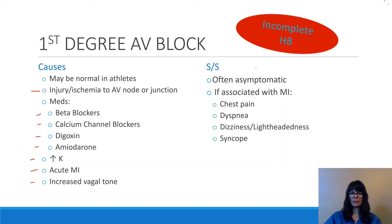For signs and symptoms, patients are sometimes asymptomatic — as in athletes who may have this as a normal finding. But if it is associated with an MI, the patient may have typical symptoms such as chest pain, shortness of breath, dizziness, syncope, sweating, and diaphoresis — any typical MI symptoms.